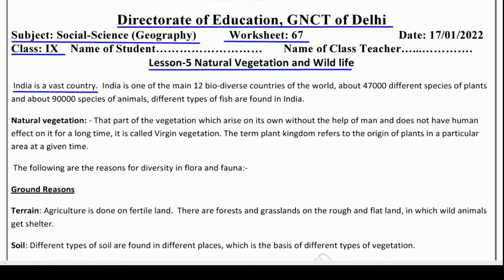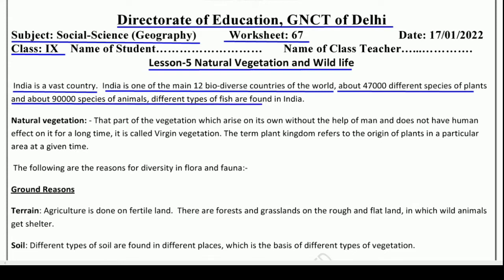India is a vast country. India is one of the main 12 biodiverse countries of the world — one of the 12 countries in the world where biodiversity is richly found. About 47,000 different species of plants and about 90,000 species of animals and different types of fishes are found in India.